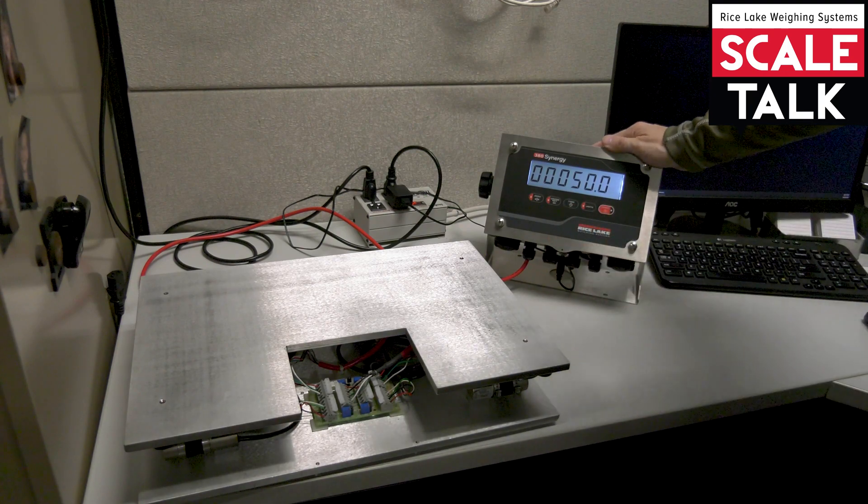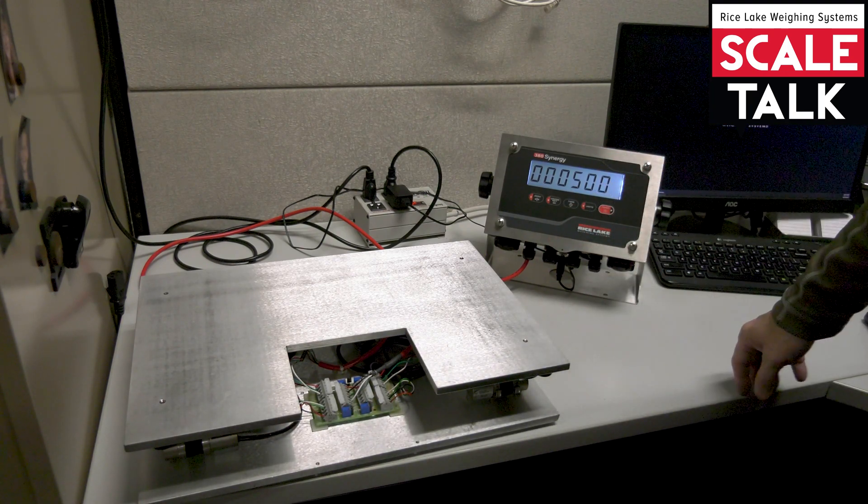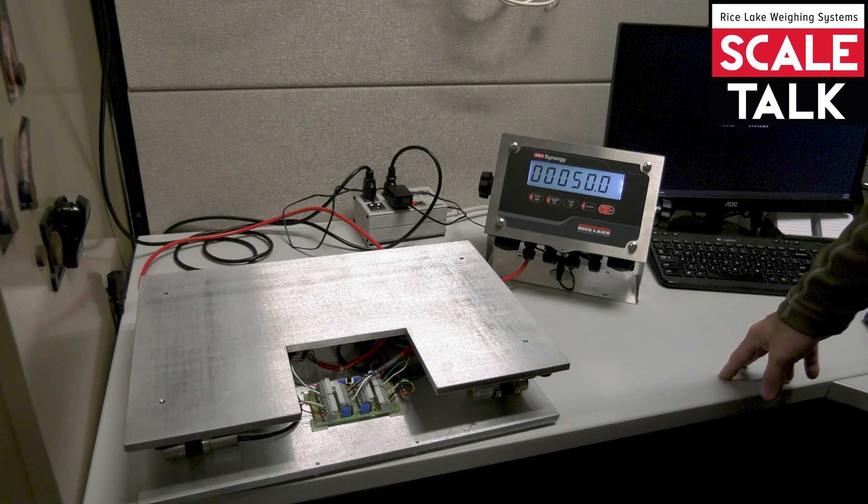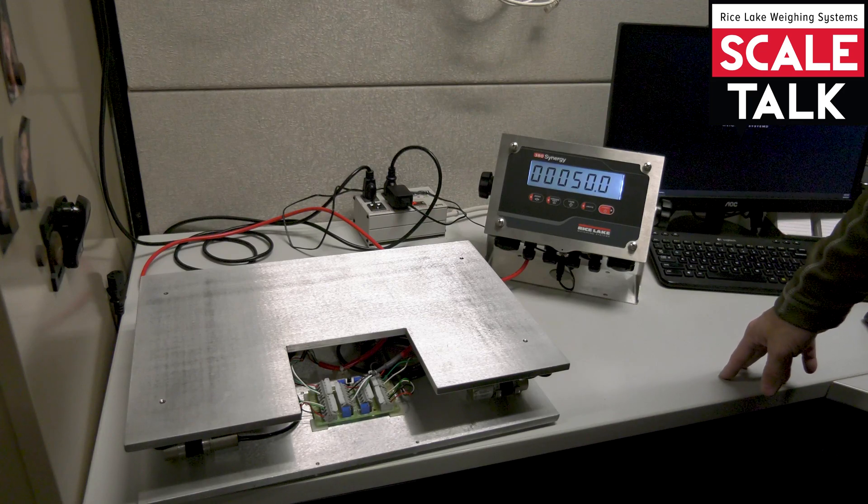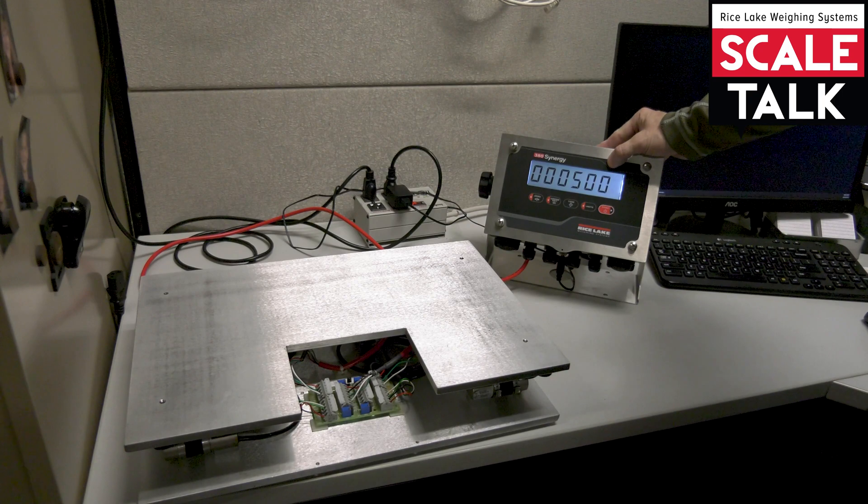And you notice that the decimal place begins blinking. If I wanted to move the decimal to create a slightly different value, then I could do that at this time. But in the first step I went ahead and set it exactly as I needed it.